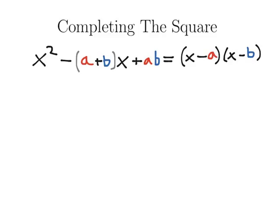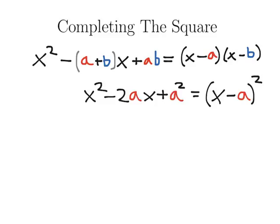But consider the case where a and b are equal. This is called a square quadratic. It's called that because this is really just that difference, x minus a, squared.